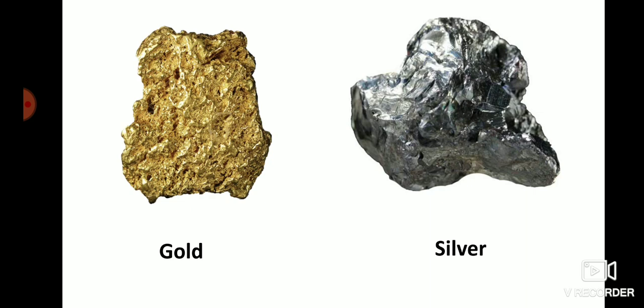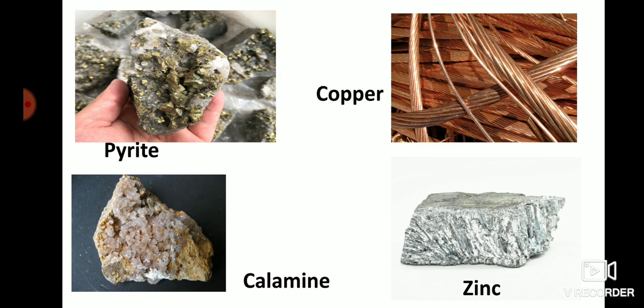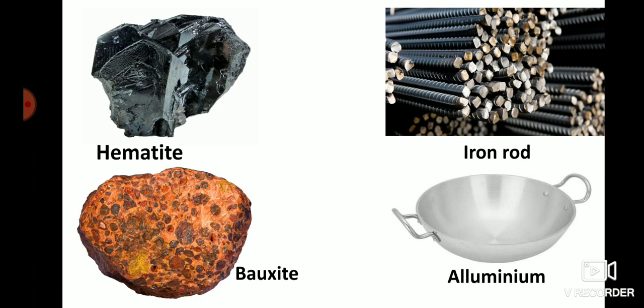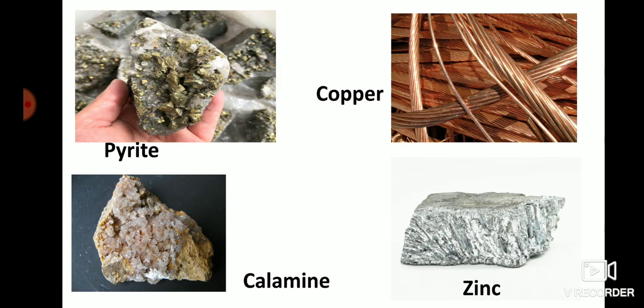Gold and silver are used for making jewelry and coins. Silver is also used for making circuits. Copper is mainly used for making wires and electrical equipment, as well as utensils. Zinc is used for making utensils and in the galvanization process. Iron is used in a huge area — for construction, making machinery parts, and vehicle bodies. Aluminium is used for making utensils, aircraft bodies, and wires.